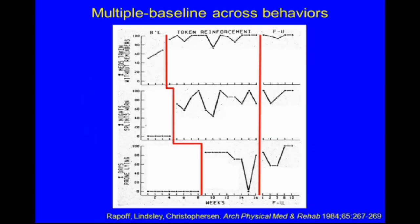This is an example of a multiple baseline across behaviors from a study with a young lady who had arthritis. She was required to take her medicines without reminders, to wear splints on her wrist at night to prevent contractures, and to do a prone lying exercise to prevent contractures in the hips. We have baseline in all three conditions. We first introduced a token reinforcement program only for medications, which increased substantially while splint wearing and prone lying were untreated. We then introduced the token system for splint wearing, then for prone lying, and both increased. These were maintained well at follow-up.